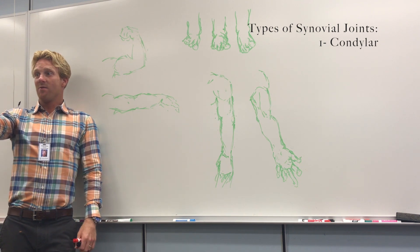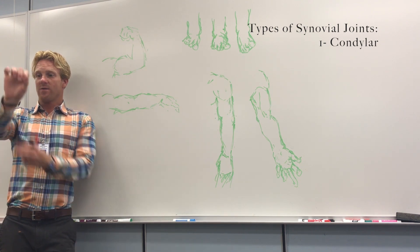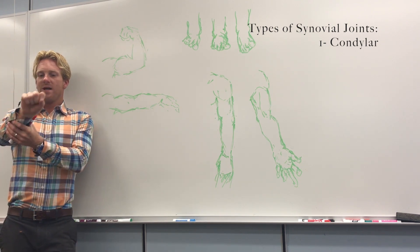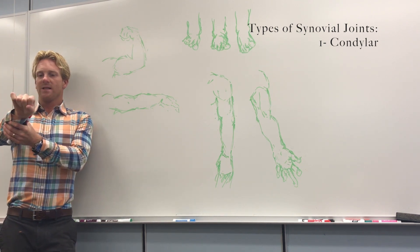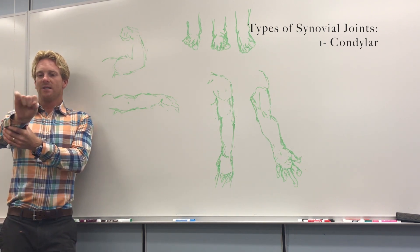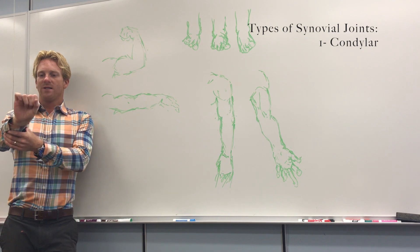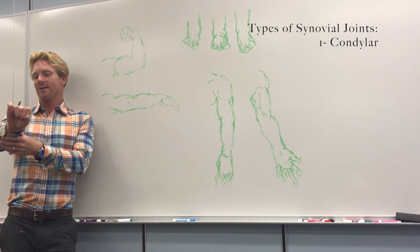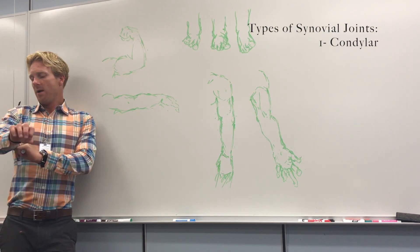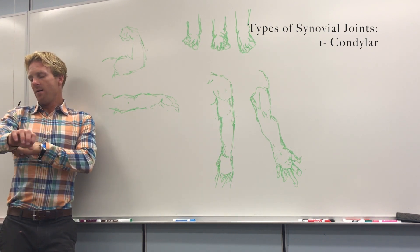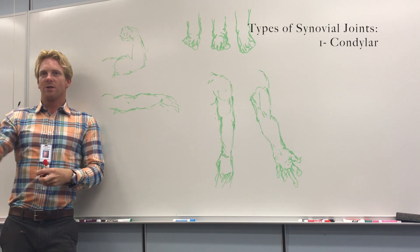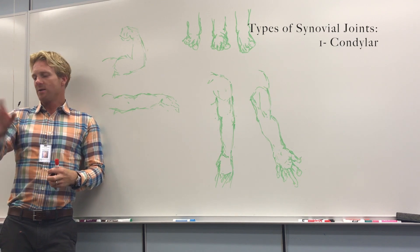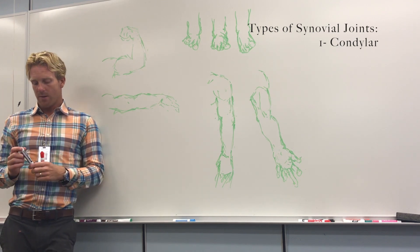The same goes for your wrist — if you hold your forearm steady, you can move your wrist like this, like this, or like this, but you can't spin your wrist. That spinning is actually allowed by motion of your radius, which we'll talk about later.